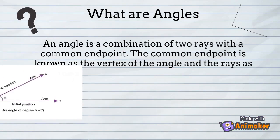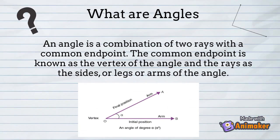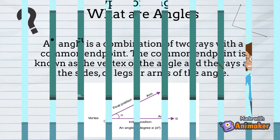What are angles? An angle is a combination of two rays with a common endpoint. The common endpoint is known as the vertex of the angle, and the rays are the sides, legs, or arms of the angle.